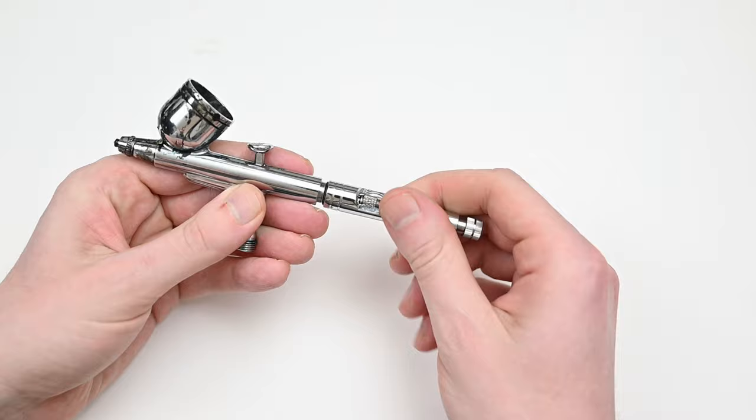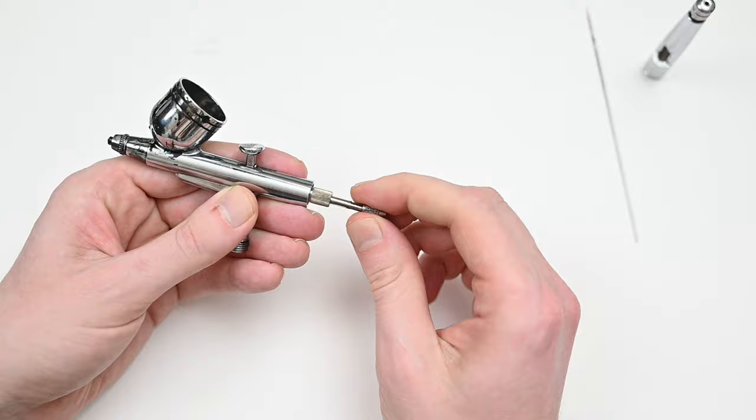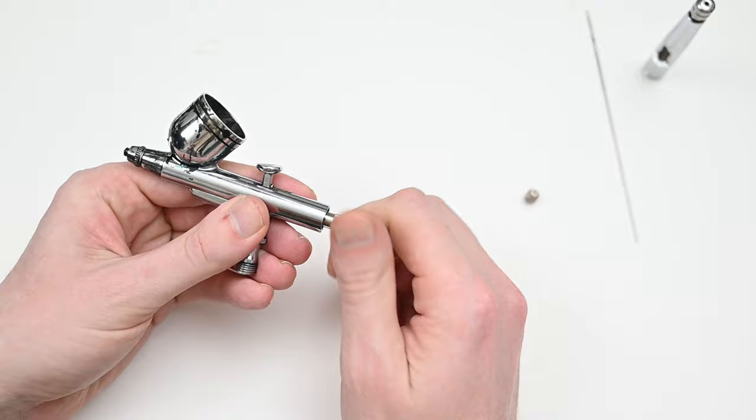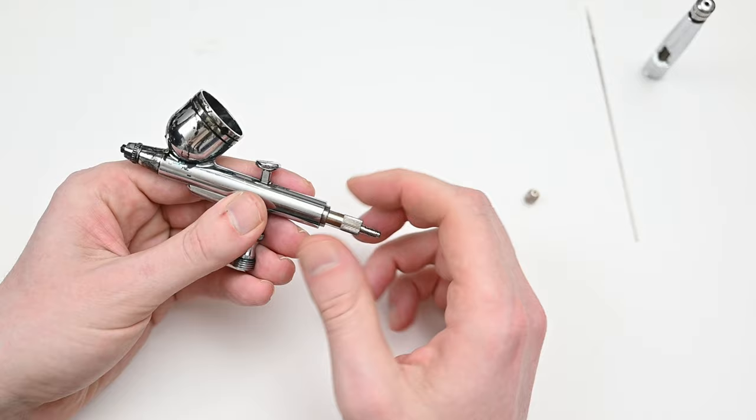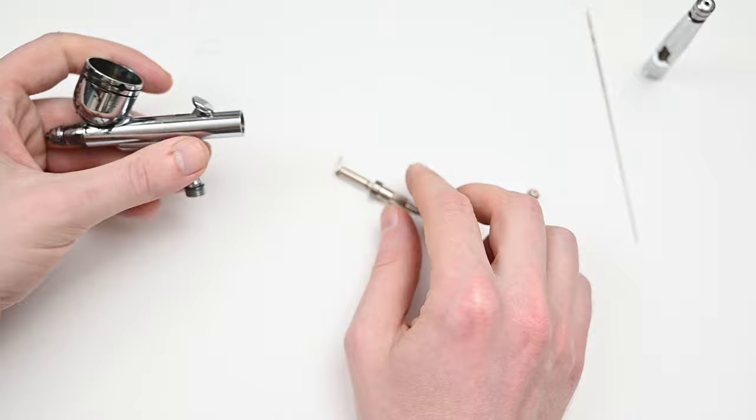After removing the rear handle, I could loosen up this chuck to remove the needle. From here, I could start to unscrew the spring assembly. Now this screw right here is going to adjust the tension of your trigger. I always recommend keeping this screwed down pretty tight because it's going to give you better control and create a better seal with the needle and the nozzle head.